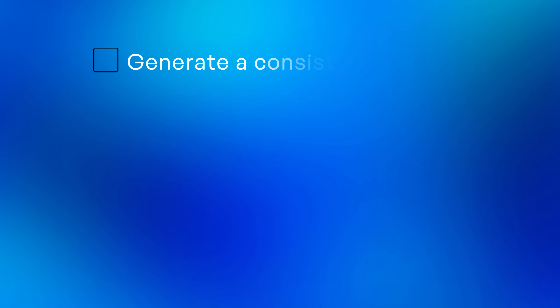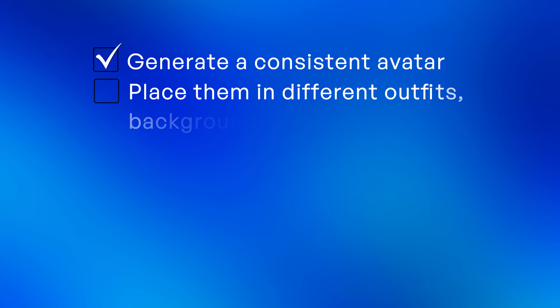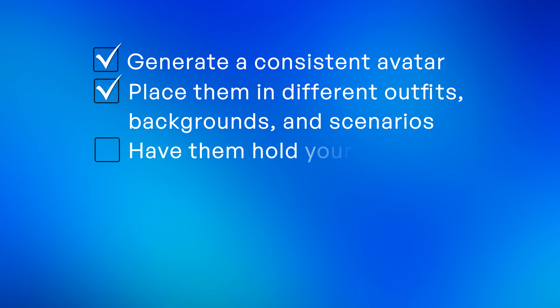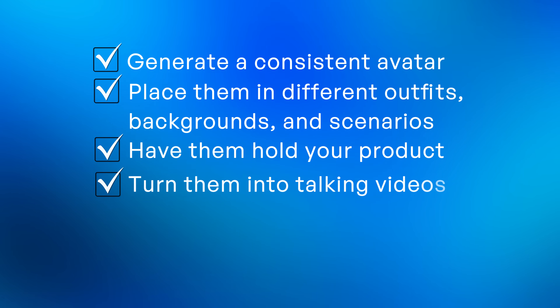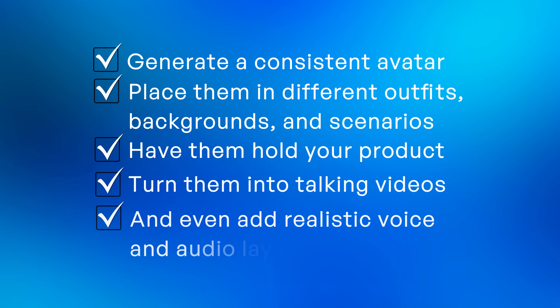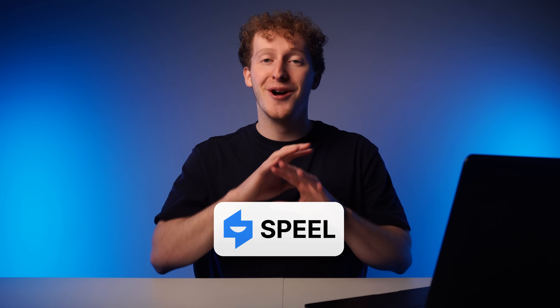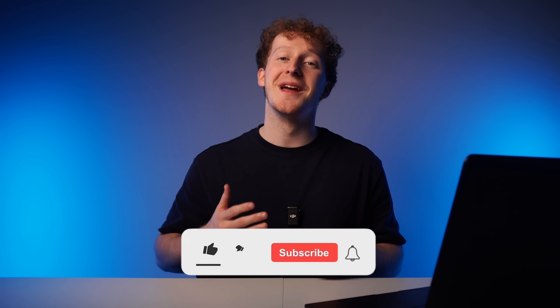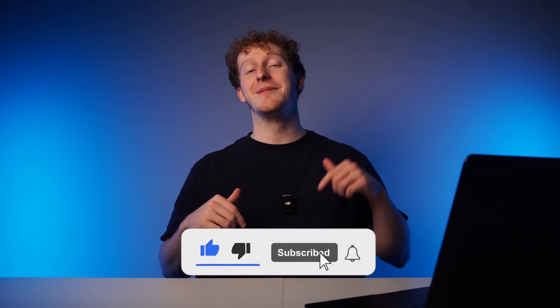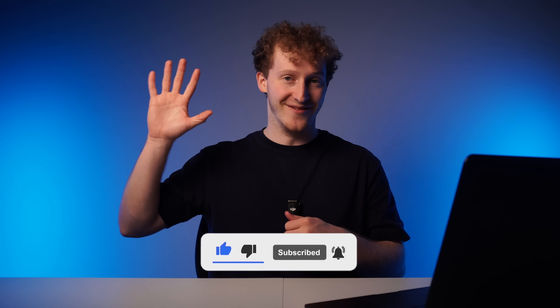So to recap: from just one single image, you can now generate a consistent avatar, place them in different outfits, backgrounds, and scenarios, have them hold your product, turn them into talking videos, and even add realistic voice and audio layers. This unlocks a new way to build ad campaigns fast, cheap, and at scale without ever having to book a shoot. If you want to start doing this today, head to Spiel.co or click the link in the description to generate your first video ad completely free. Until then, create smarter, smash that like button, subscribe if you enjoyed today's video, and I will see you very soon. Bye.